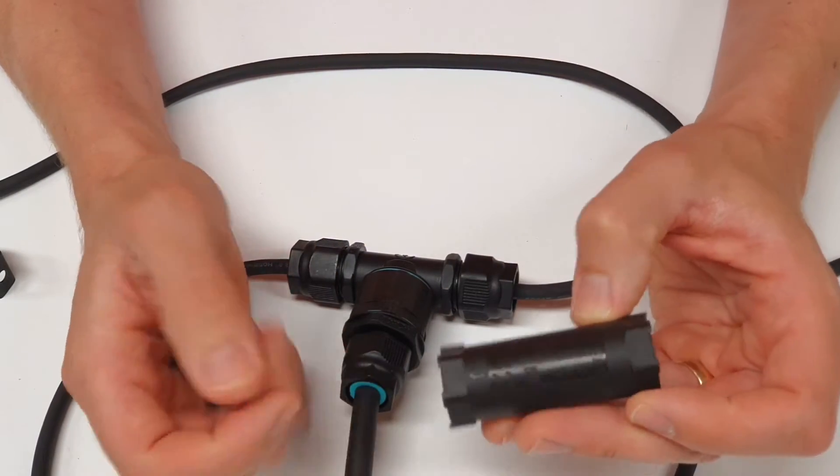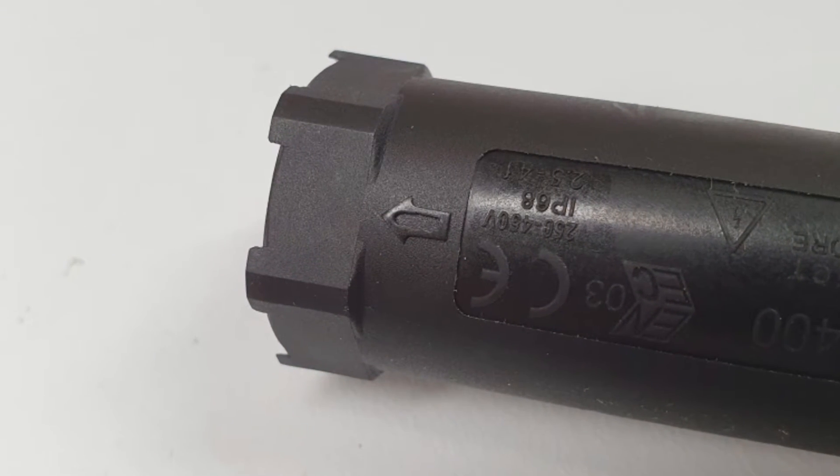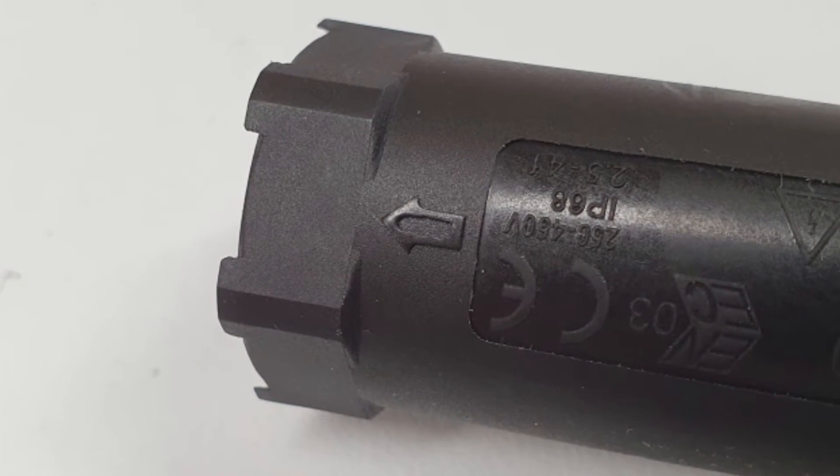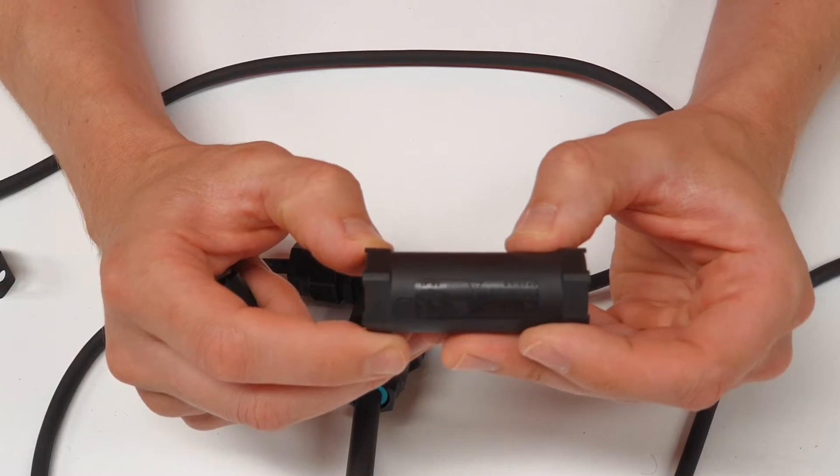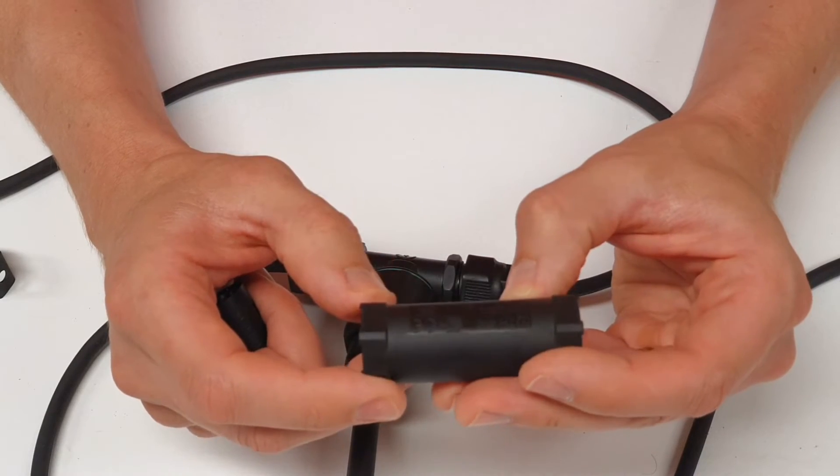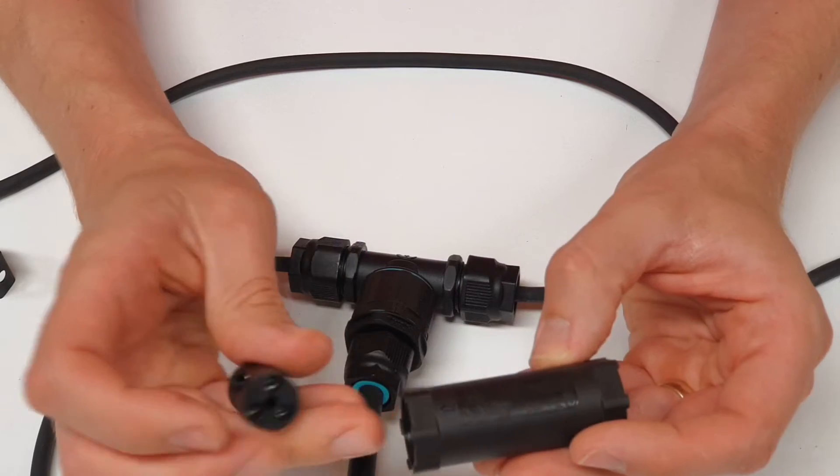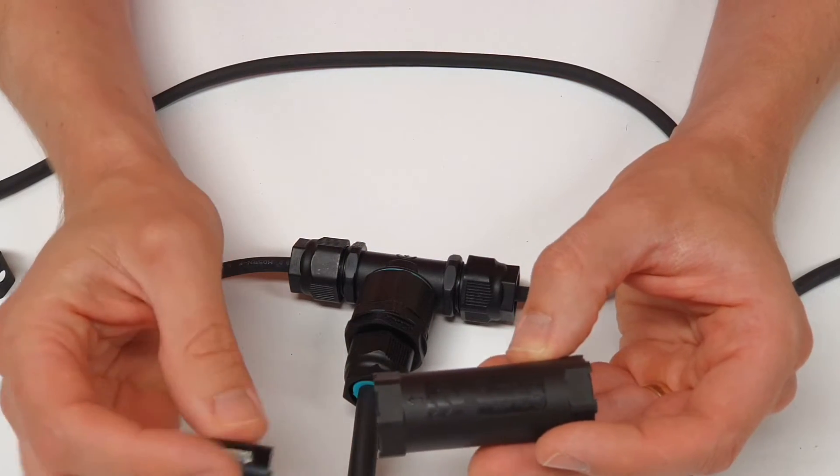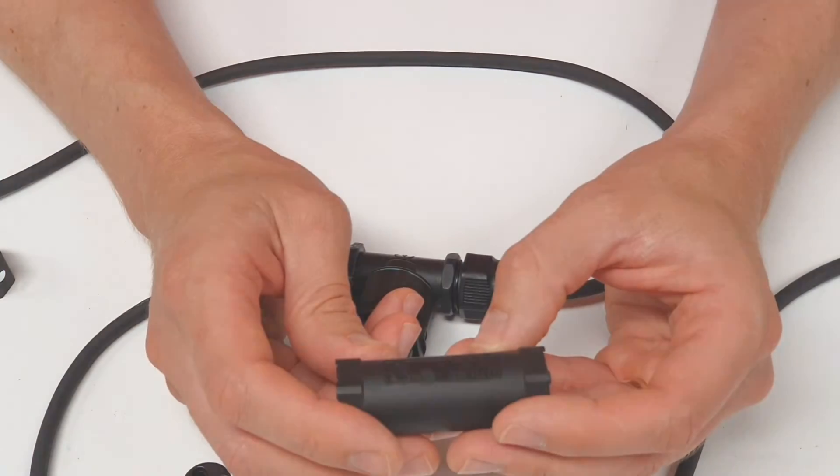Notice that's indicated by the arrow on the end of the cylinder there. The connector will come out from this end. Now that's to aid installation so the connections can be made secure without falling out at one end as you tighten up the other end. So to take advantage of that you need to make the connections in the right order.